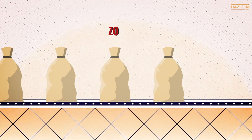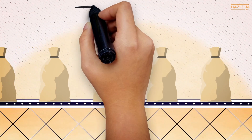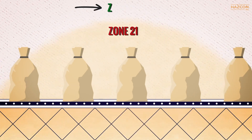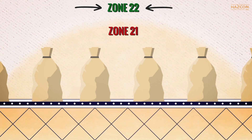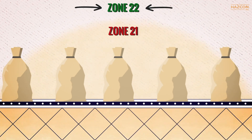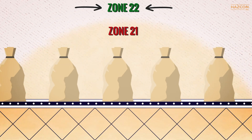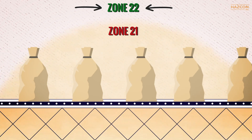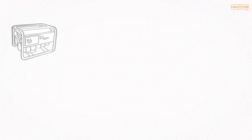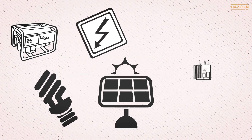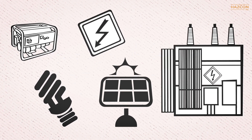This animation is about Zone 22. Zone 22 is defined as an area in which an explosive dust atmosphere, in the form of a cloud of dust in the air, is not likely to occur in normal operation, but if it does occur, will persist for a short period only. Ignition sources must be prevented during normal operation.